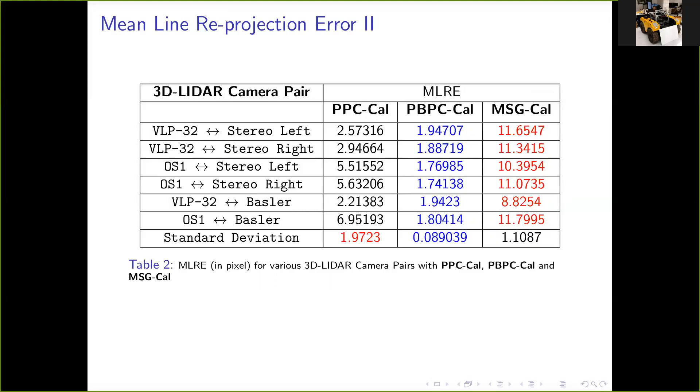As noted in the paper concerning PBPC-Cal, Ouster LIDAR is a noisy sensor and we hypothesize that PPC-Cal gives poorer results because it is affected by this noise. And PBPC-Cal is not affected by it as much because it uses additional geometric constraints. MSG-Cal, being a graph-based approach, perhaps has all its nodes affected by a single noisy sensor.